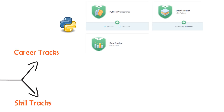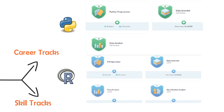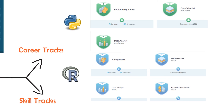3 career tracks are in Python: Python programmer, data scientist in Python, and data analyst in Python. 4 career tracks are in R: R programmer, data scientist in R, data analyst in R, and quantitative analyst in R.